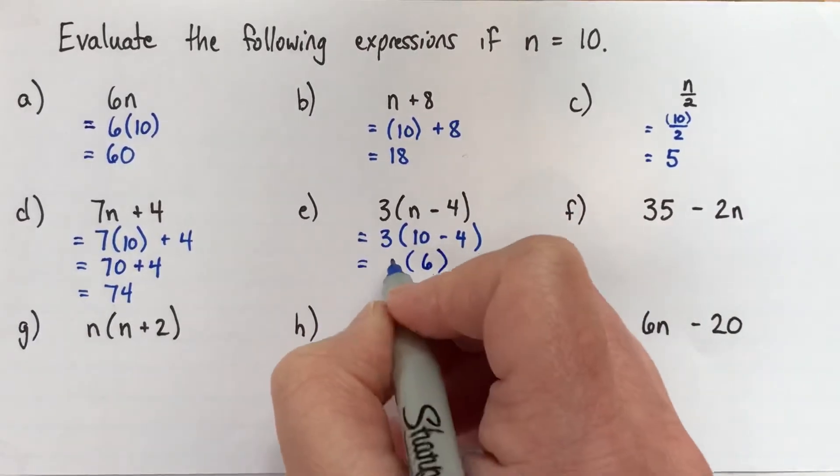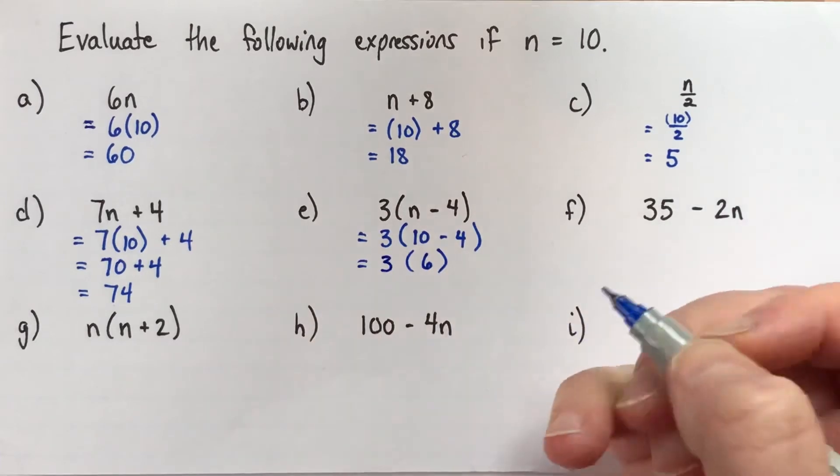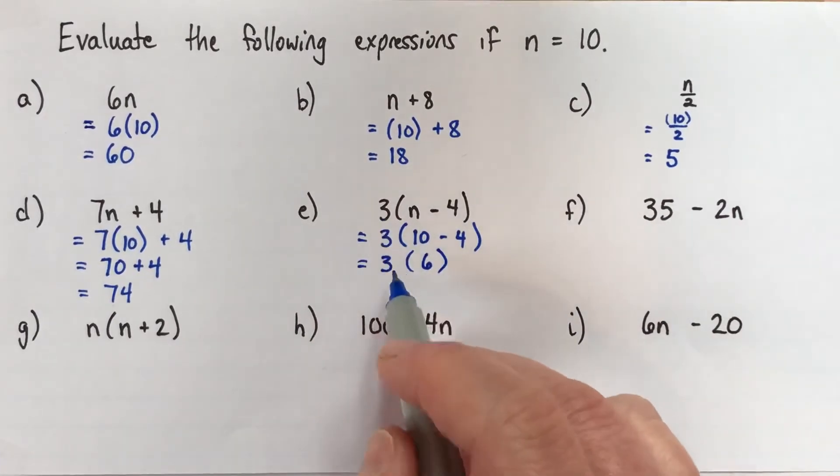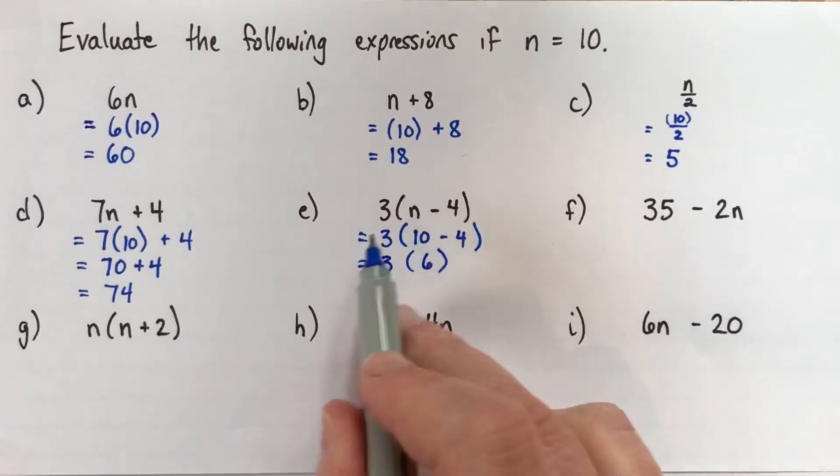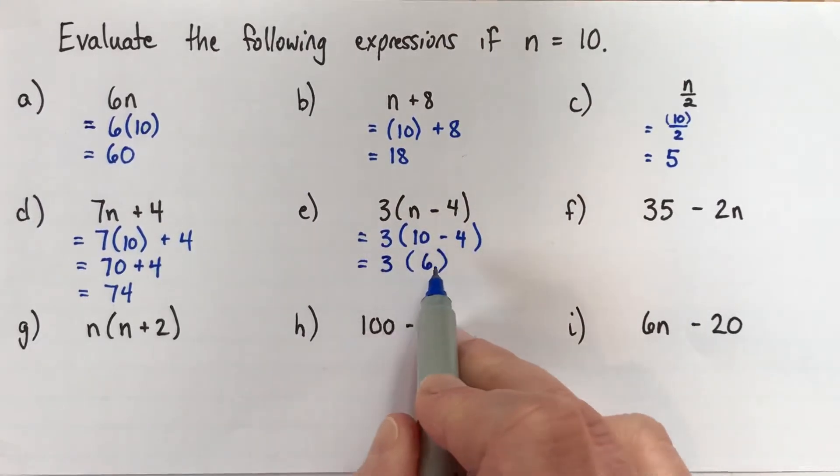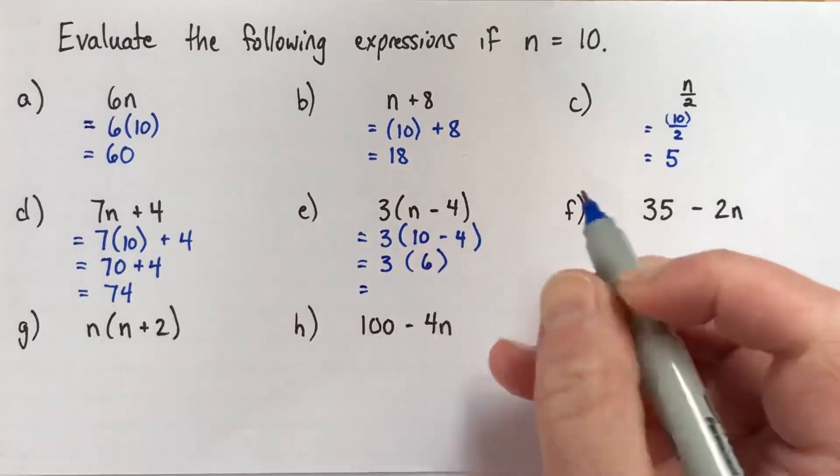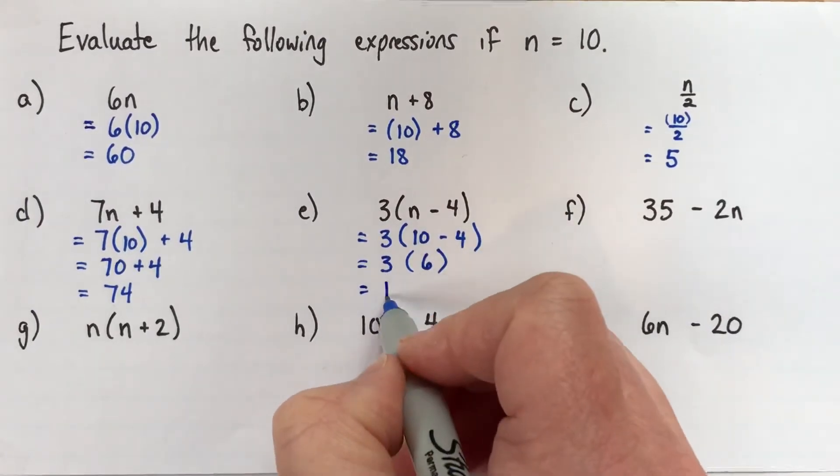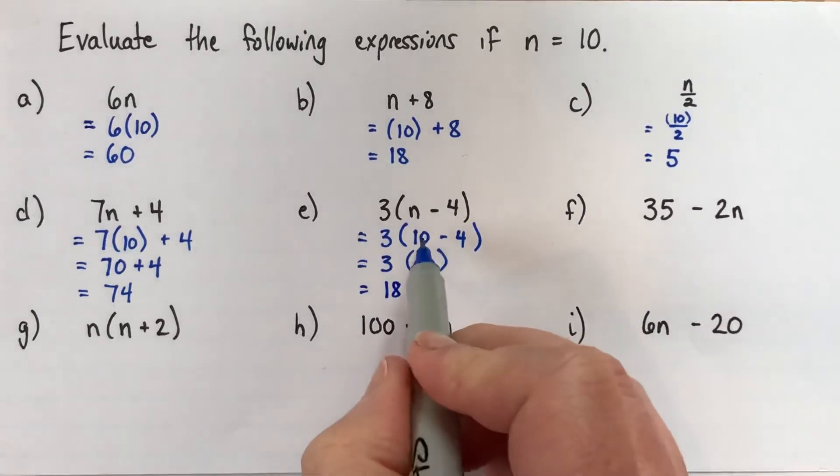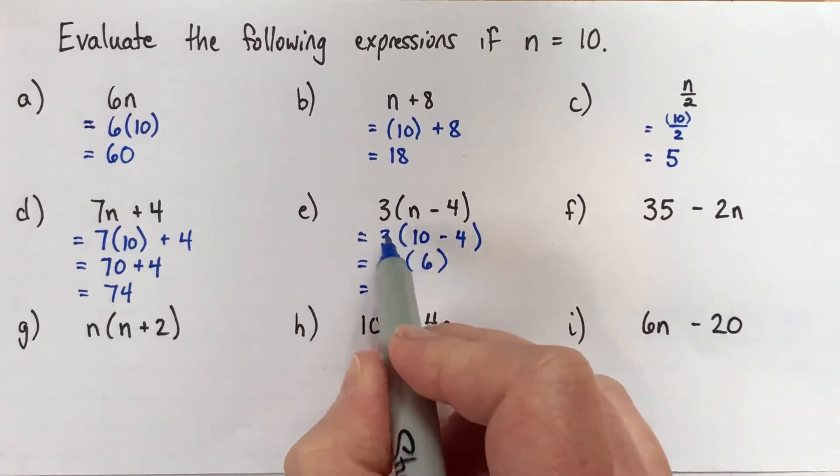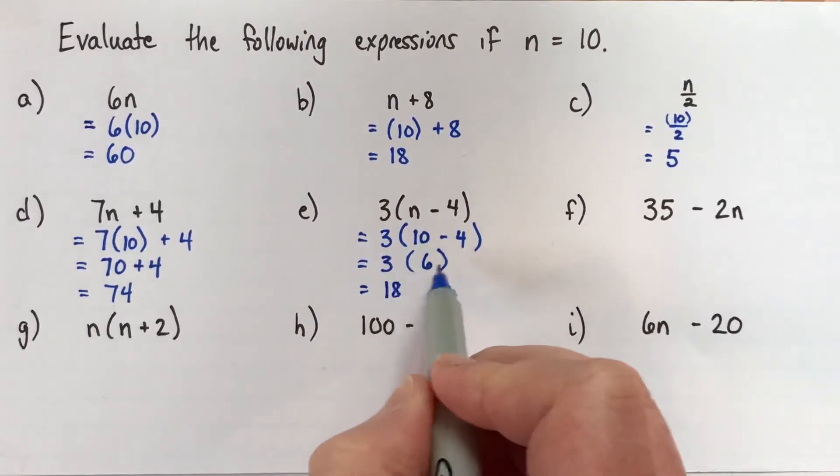And I still need to write this 3 here. If I just wrote the 6, and then I multiply by 3 on the next line, it wouldn't be a very good solution. Because it doesn't give a list of equal expressions. So 3 times 6 is 18. So if you're not sure what to write, you can just write down the thing that you did. So we did 10 subtract 4 is 6. And then you can just copy everything else that was on the line above.